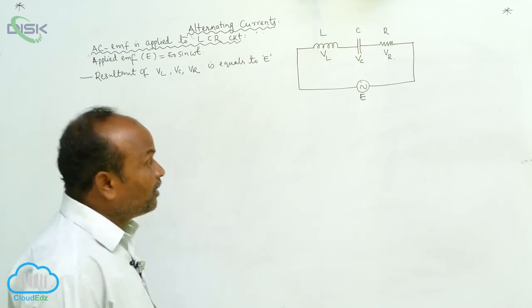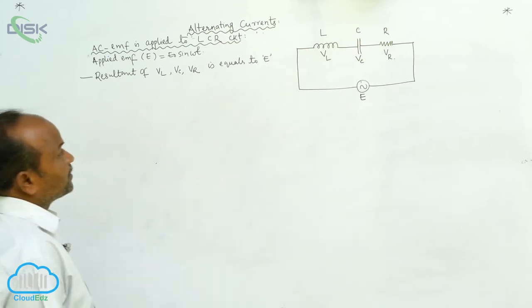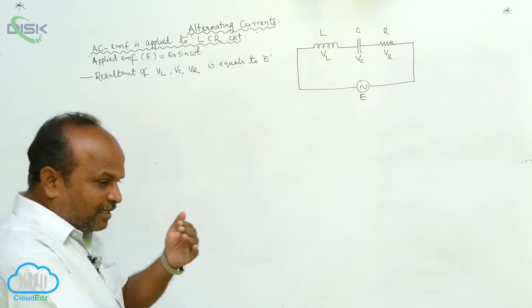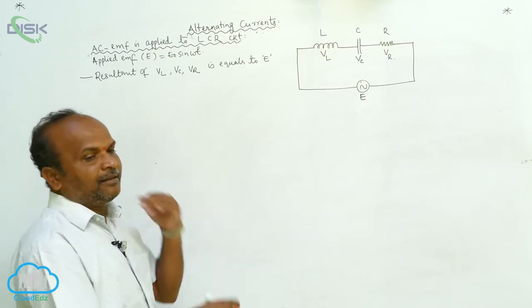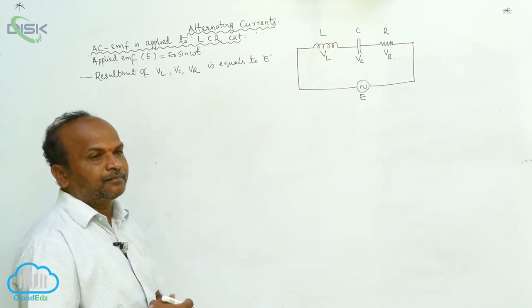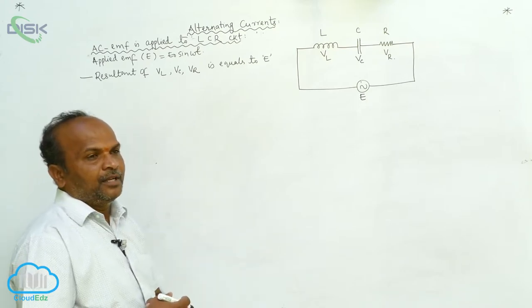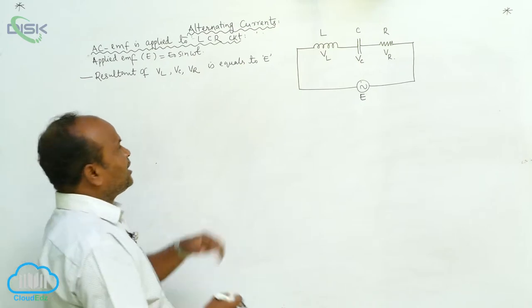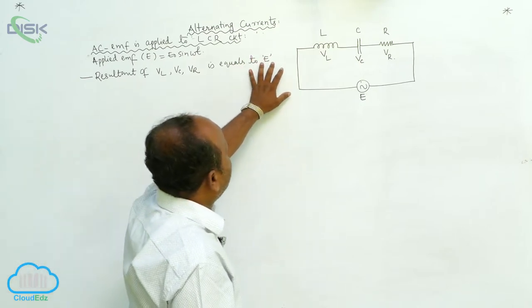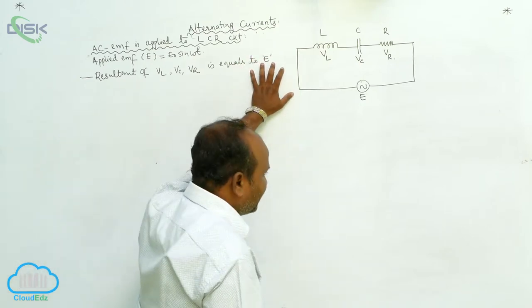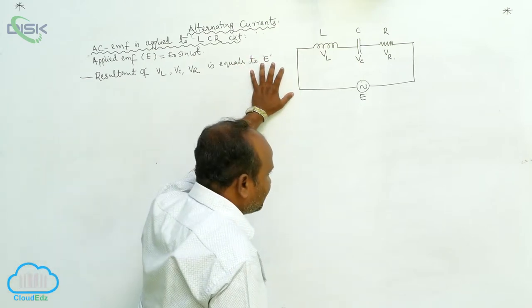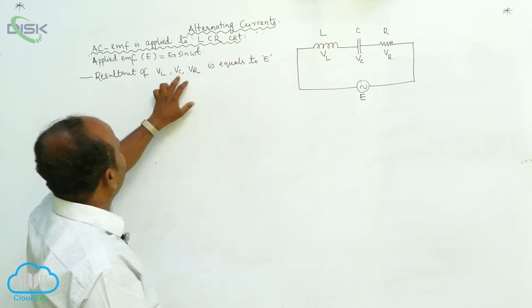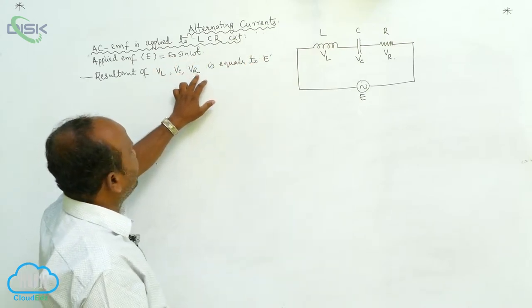Here in this case, by using the vector diagram, it is possible to calculate the resultant EMF using Vl, Vc, and Vr.